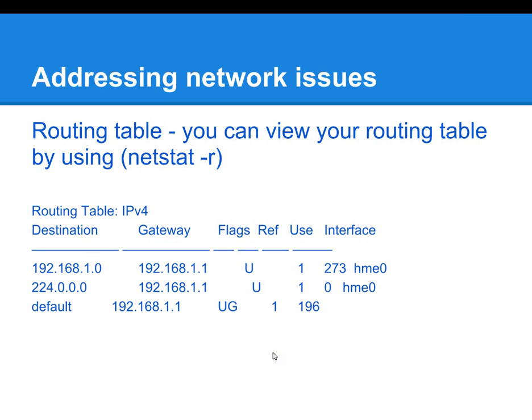If you want to change your routing because you didn't like the traceroute output, run netstat -r to confirm the routing table. You can then use route delete to remove old routing information and route add to put in new information, with the intention of improving network performance by giving packets a quicker route.